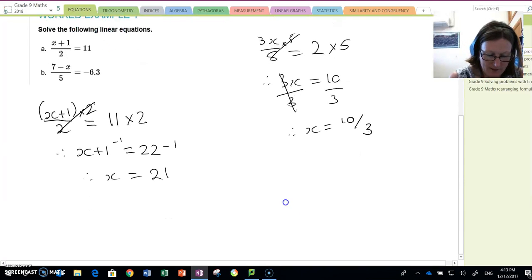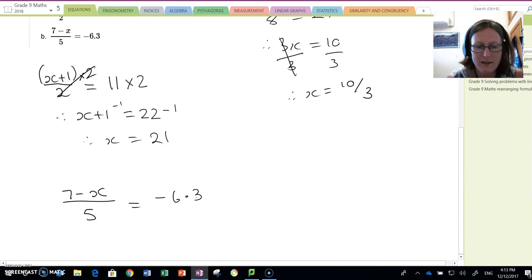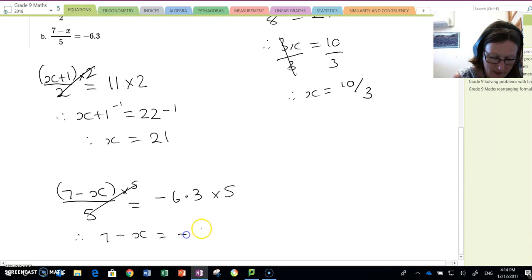Our second example of this sort, 7 subtract x all divided by 5 is equal to negative 6.3. So 7 subtract x is all divided by 5. That is my package. So I'm going to times by 5. That cancels. So I have 7 subtract x being equal to negative 31.5.